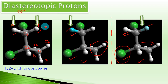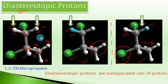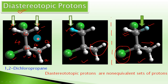Diastereotopic protons are chemically non-equivalent sets of protons and give different signals in NMR. Therefore 1,2-dichloropropane gives 4 NMR signals: one signal from the 3 protons on C3, one signal from the 1 proton on C2, and two separate signals from the diastereotopic protons X and Y on C1.